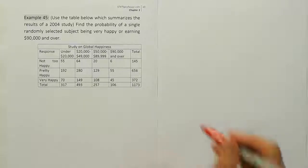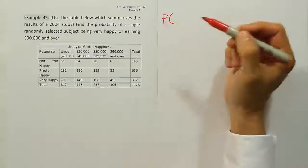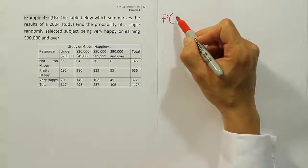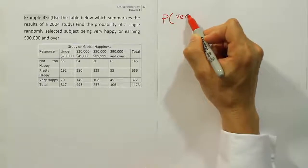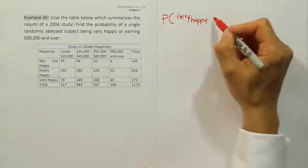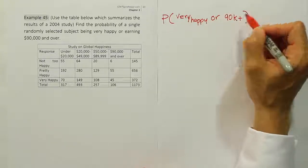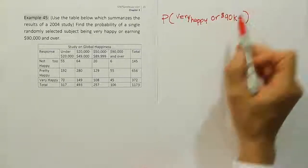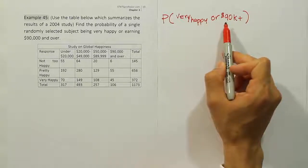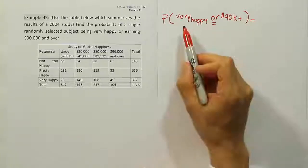Since it's an addition rule problem, the first thing I'm going to do is write out the probability statement. This is the probability of being very happy or earning ninety thousand dollars or more per year — so the probability of 'very happy OR 90K+ per year.' That's the probability we're looking for.